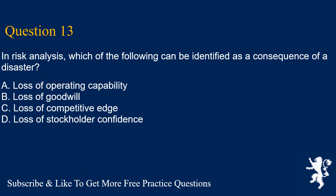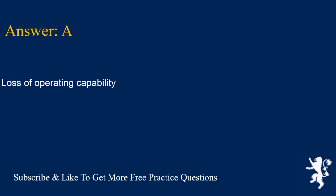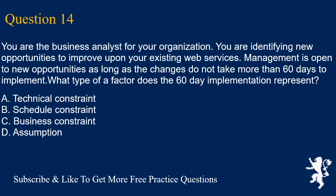Question 13: In risk analysis, which of the following can be identified as a consequence of a disaster? A. Loss of operating capability. B. Loss of goodwill. C. Loss of competitive edge. D. Loss of stockholder confidence. Answer is A. Loss of operating capability.